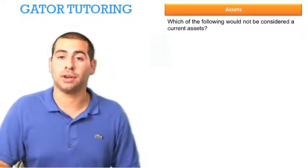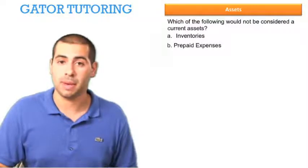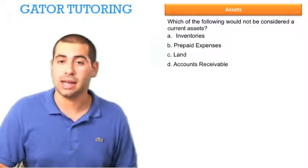Which of the following would not be considered a current asset? Would it be A. Inventories, B. Prepaid expenses, C. Land, D. Accounts receivable, or E. None of the above?